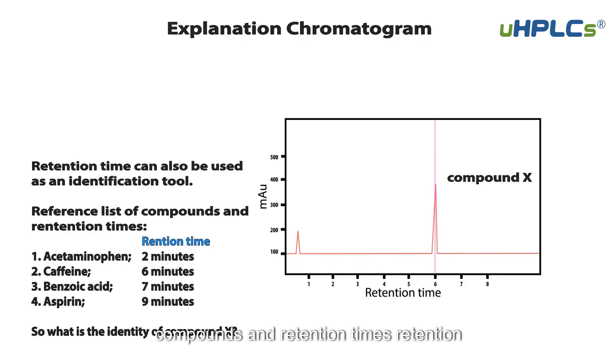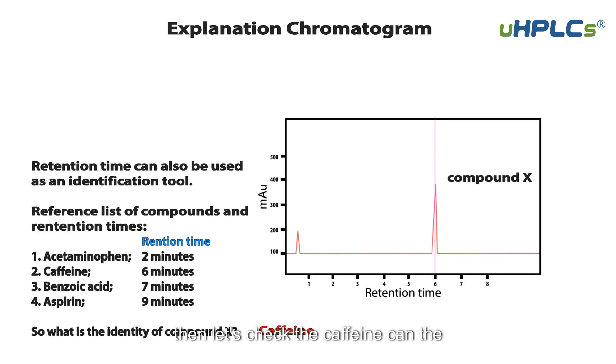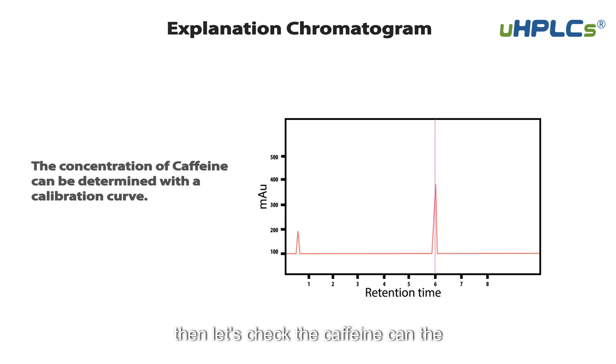Using a reference list of compounds and their retention times, we can identify unknown compounds. So what is the identity of compound X? Let's check — the identity matches caffeine.